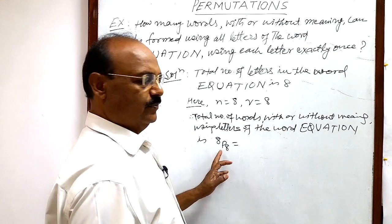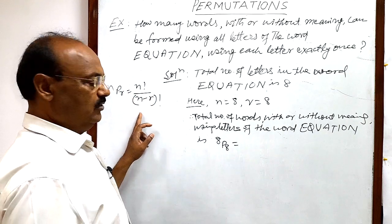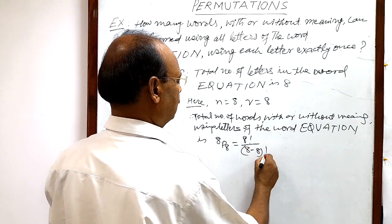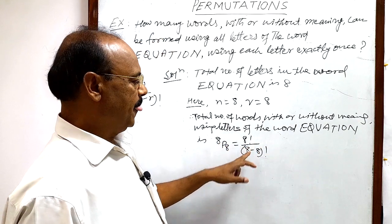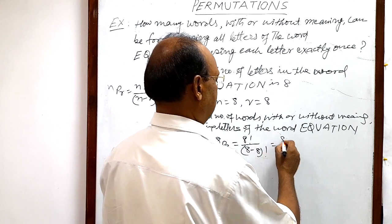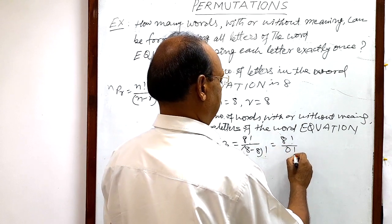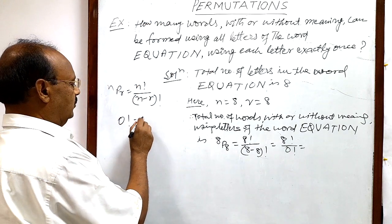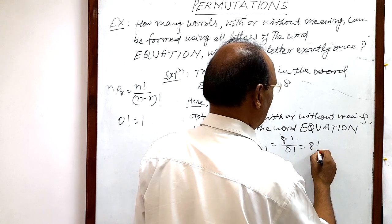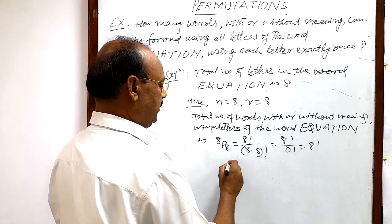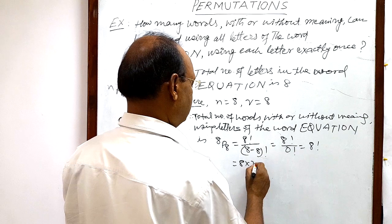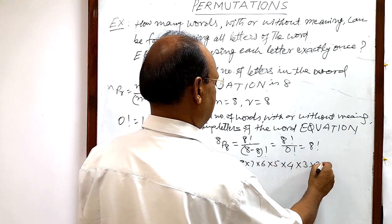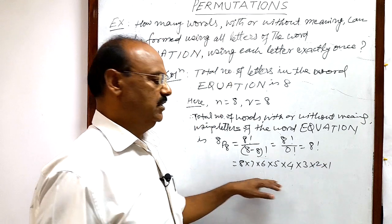Let us calculate it. With the help of this formula we can write 8P8 is equal to 8 factorial divided by (8 minus 8) factorial, which equals 8 factorial divided by 0 factorial. Since 0 factorial is equal to 1, this simplifies to 8 factorial. Now 8 factorial equals 8 × 7 × 6 × 5 × 4 × 3 × 2 × 1.